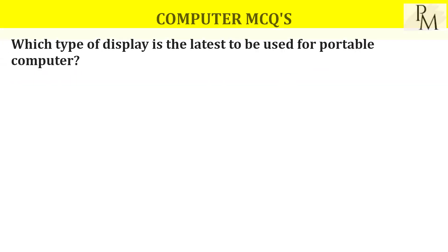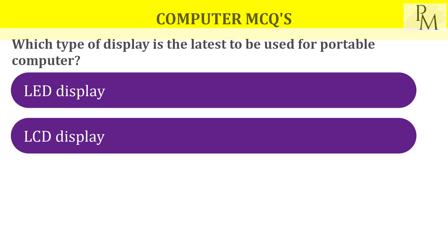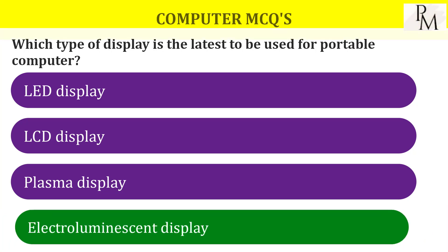Which type of display is latest to be used for portable computers? Options include LED, LCD, plasma, and electro luminescent display. The answer is electro luminescent display.